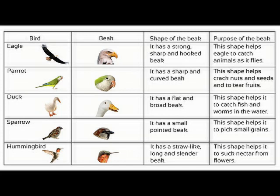Next, the sparrow. The sparrow has a pointed beak, but it is small and short. This shape helps it to pick small grains — grains means seeds, like paddy and wheat.